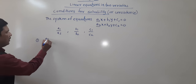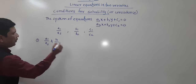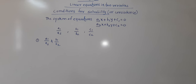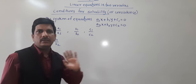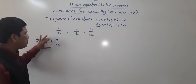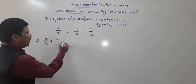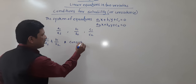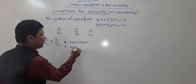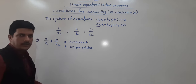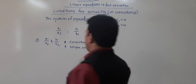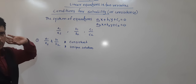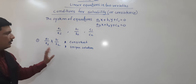First, we are going to see: when a1/a2 is not equal to b1/b2. There are two equations, and each equation will show a line in the Cartesian plane. When a1/a2 is not equal to b1/b2, there is a unique solution. This is the first consistent case — unique solution means you will get exactly one solution, because both lines will intersect each other.